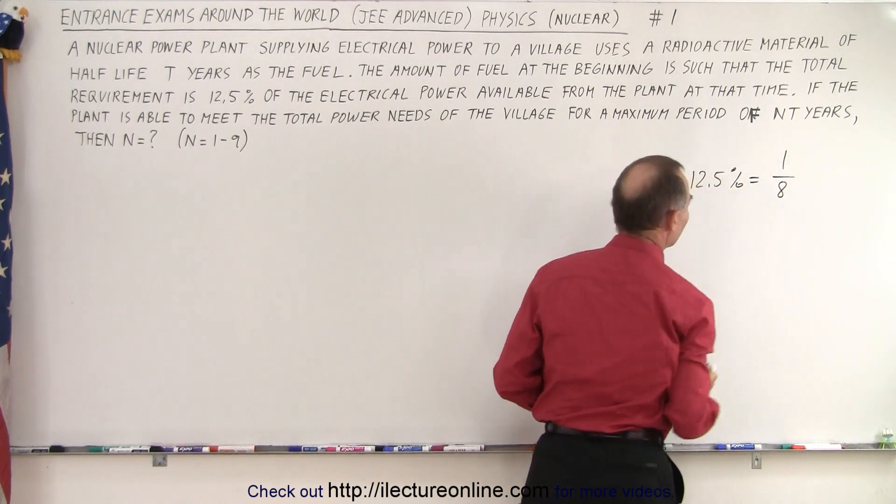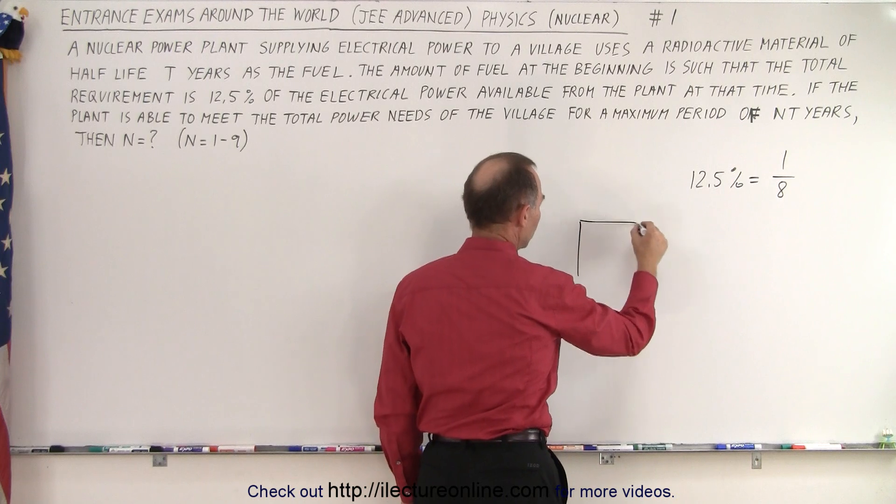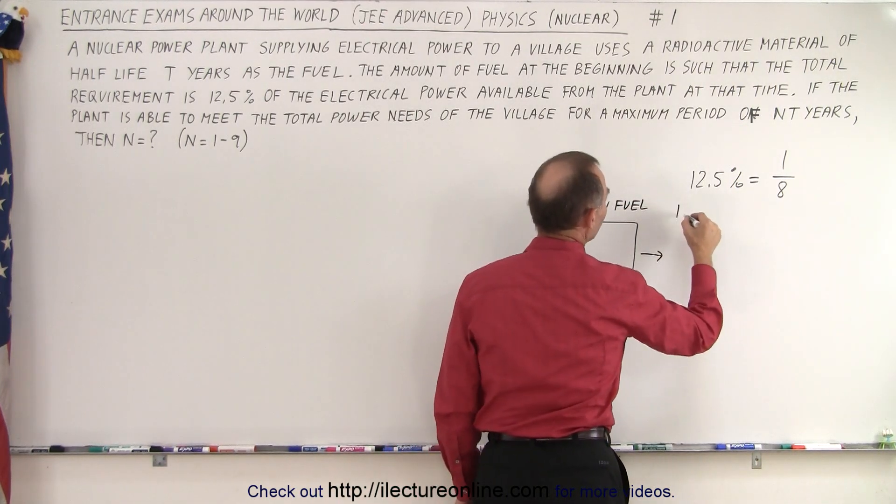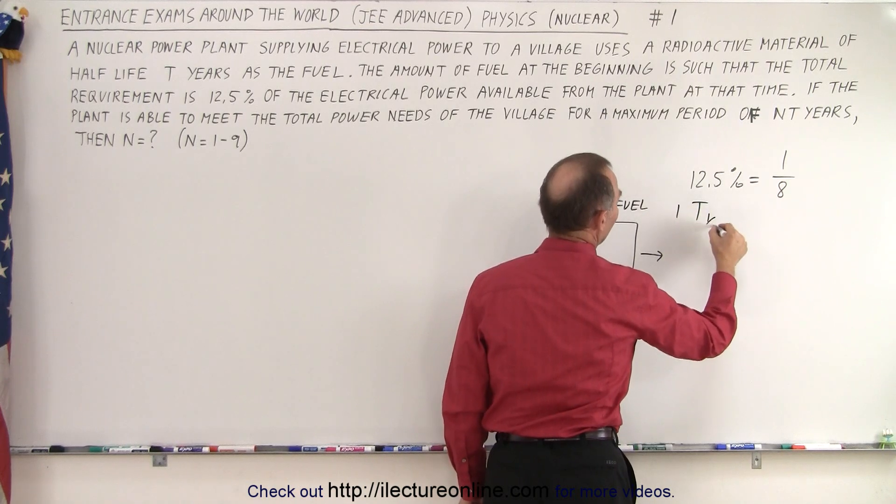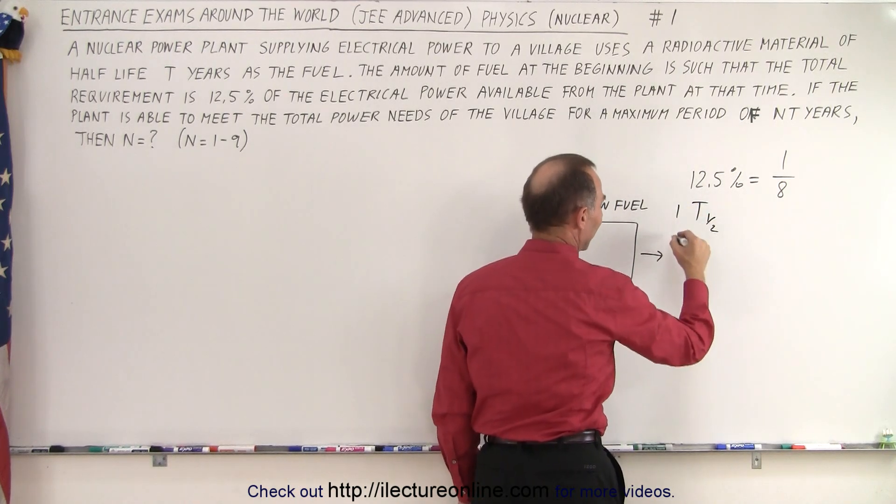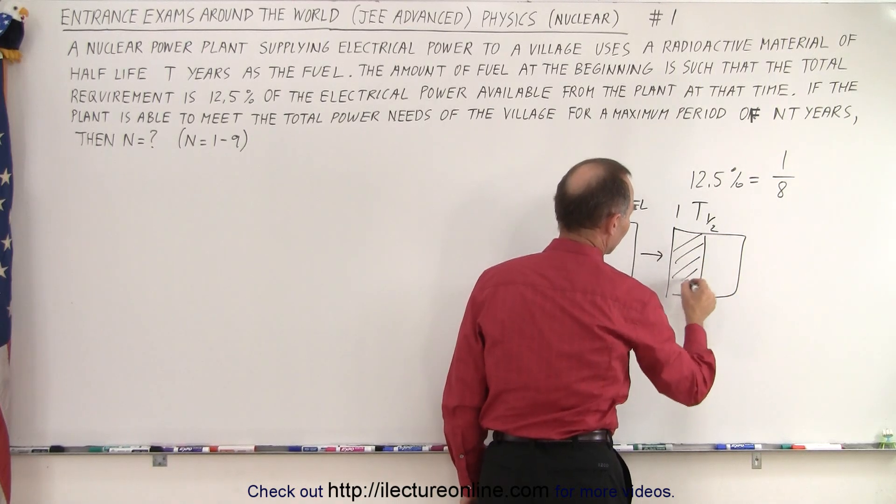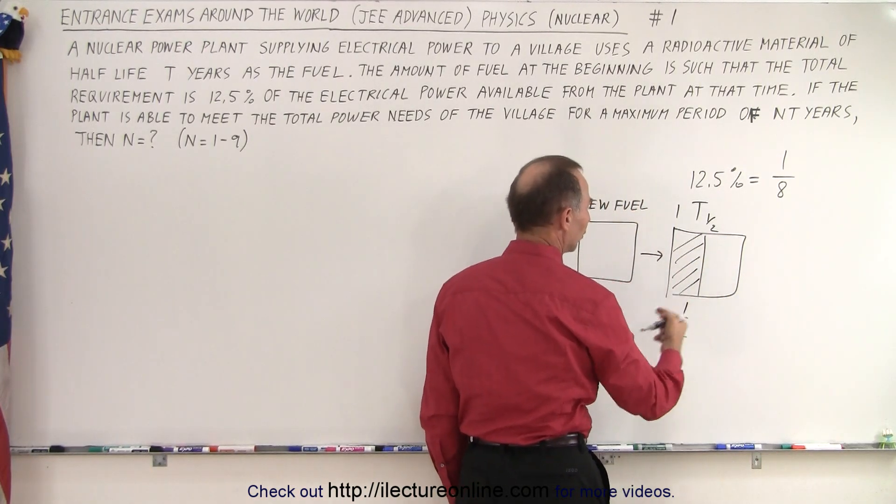If you start out with new fuel, then after one half-life t sub one half, that's the symbol we use for half-life, you now only have half the fuel left over, so you're down to one half of the original fuel.